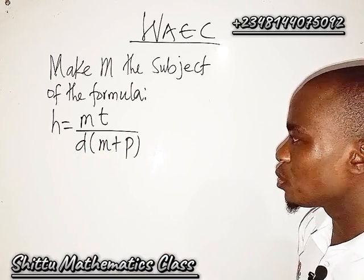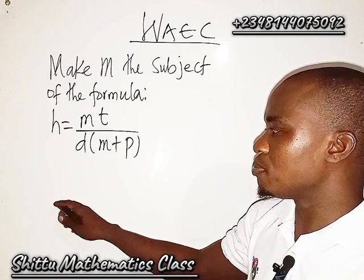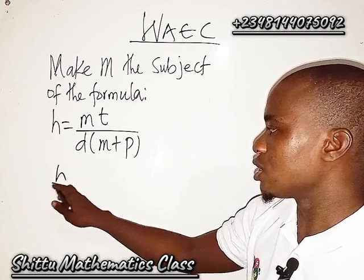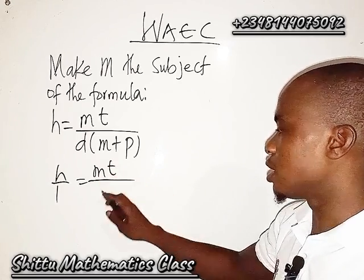What we are going to do is from here, I can divide this one by one so that it will be h over one in the form of a fraction, then mt divided by d.